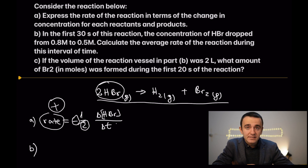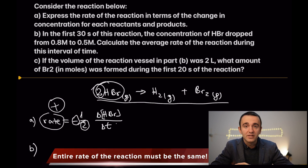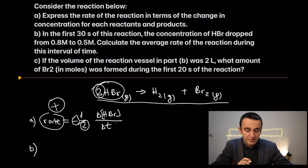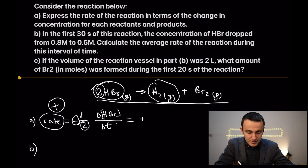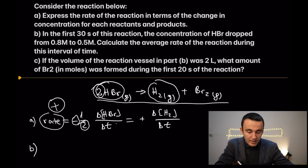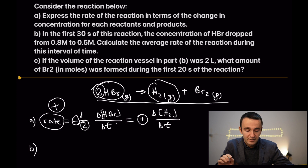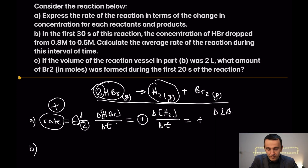This 2 is the stoichiometric coefficient in the balanced equation, because we want the rate to be equal for each component of the same reaction, respecting the stoichiometry. Now, if we want to express the rate in terms of the products, in the case of hydrogen, we have plus the change in concentration of hydrogen divided by the change in time, because the concentration of the products is increasing as the reaction proceeds. Equally, it is going to be the same for bromine: plus the change in concentration of bromine divided by time. This is how we express the reaction rate for a given reaction.